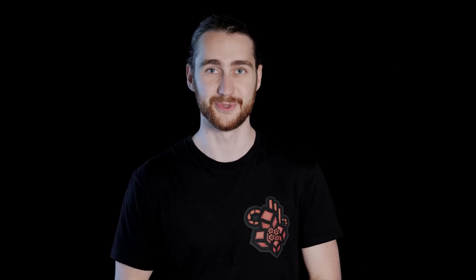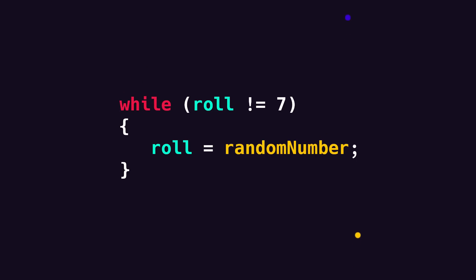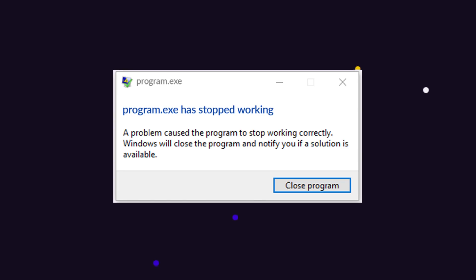Now, this is also where we have to be careful with while loops, because if we don't write them correctly, we might accidentally put in a condition that will always be true. Say if we accidentally check if our roll is not equal to seven — our roll will always have a value between one and six. And so this loop will keep running infinitely and crash our program. Don't panic if this happens, it just means that our while loop doesn't know when to stop. And trust me, you will make this mistake at some point — every programmer has.